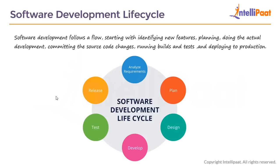Software Development Lifecycle. Software development follows a flow starting with identifying new features, which is the requirements part, followed by planning and then actual development — coding and designing — followed by committing source code changes and running builds and tests. These tests can include unit tests, integration tests, functional tests, acceptance tests, and smoke tests. And finally, deploying to production.